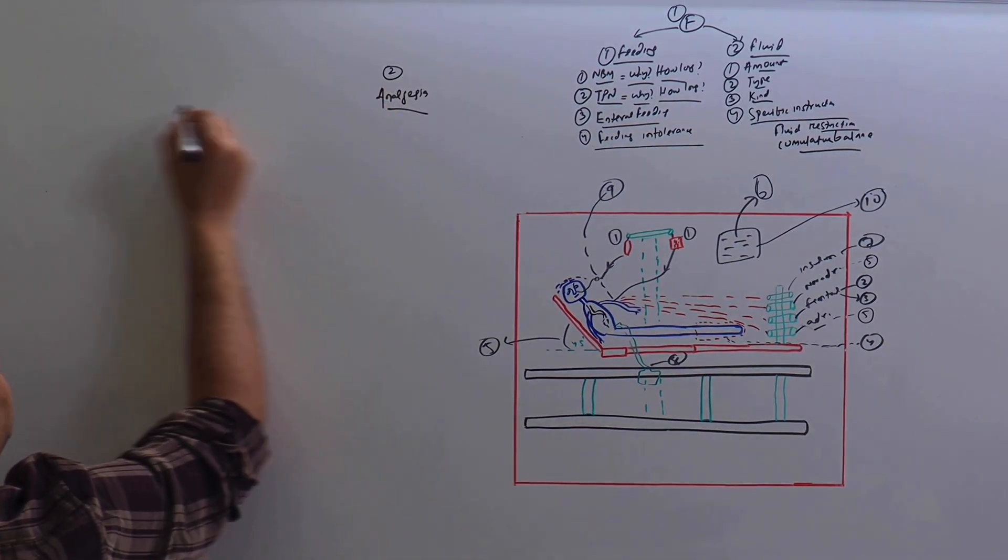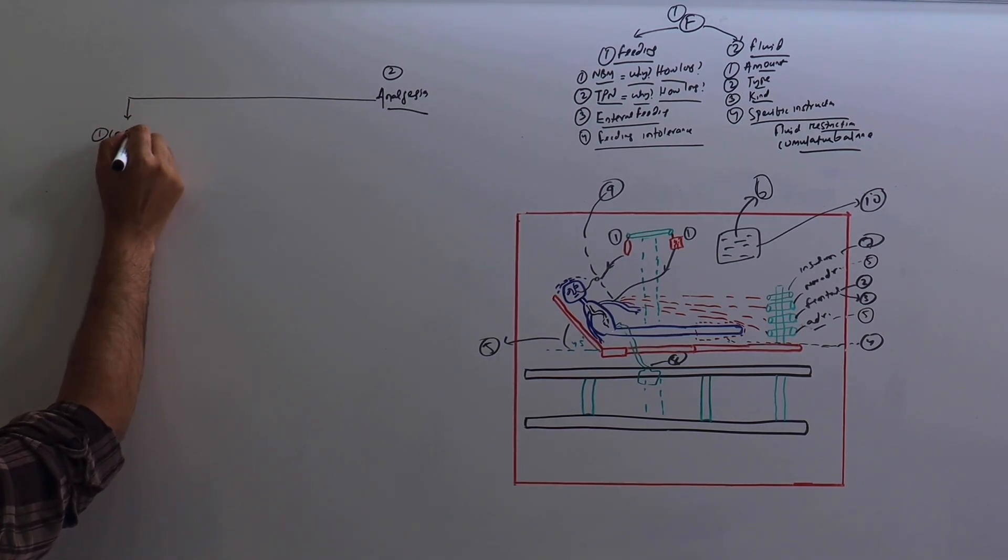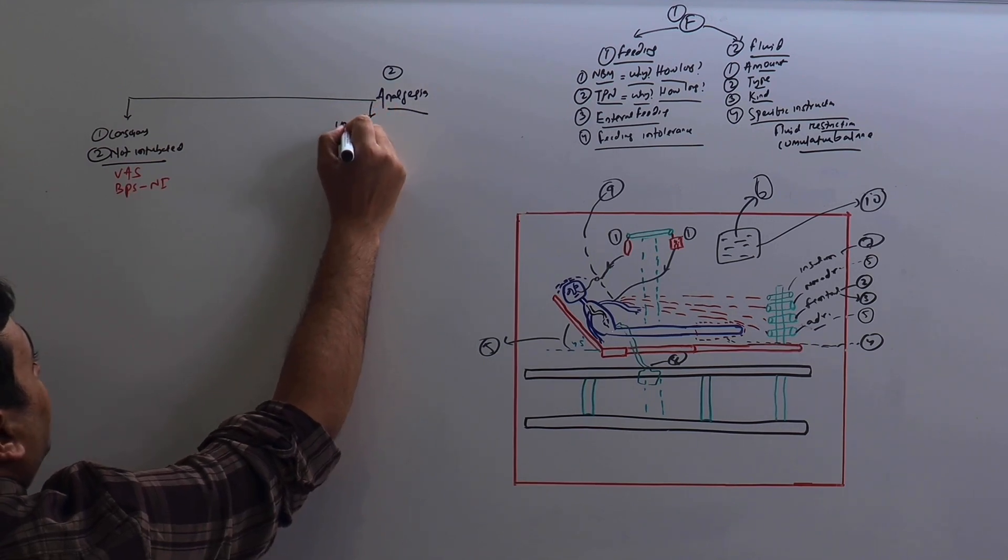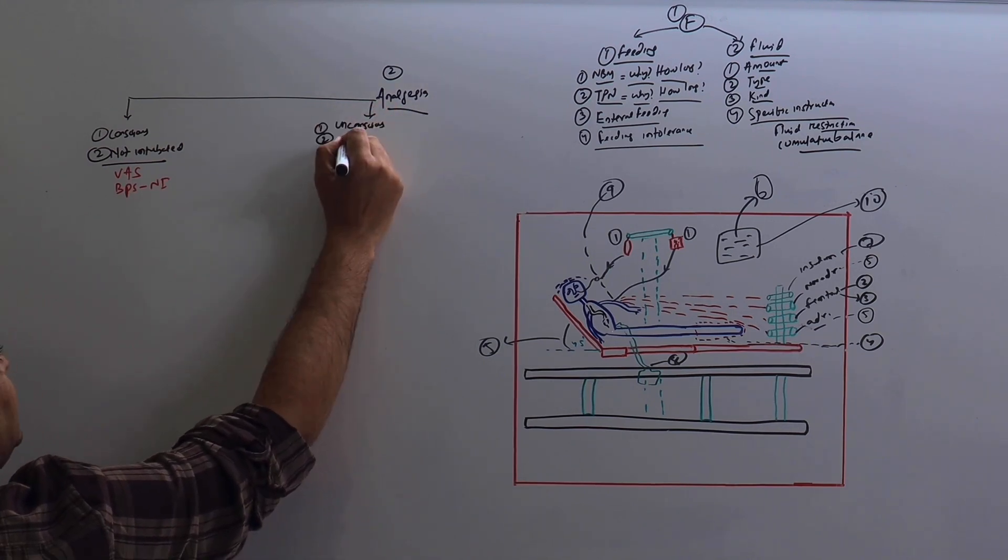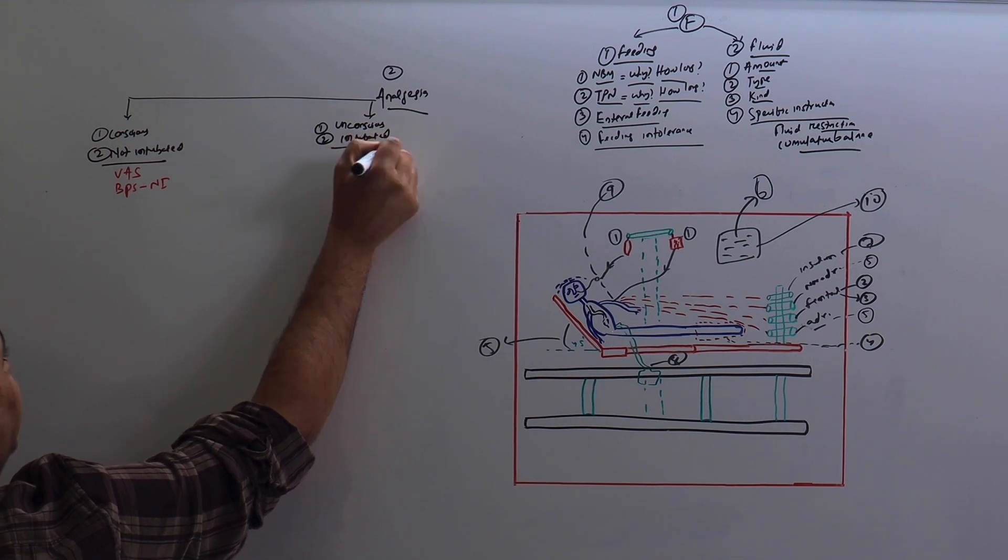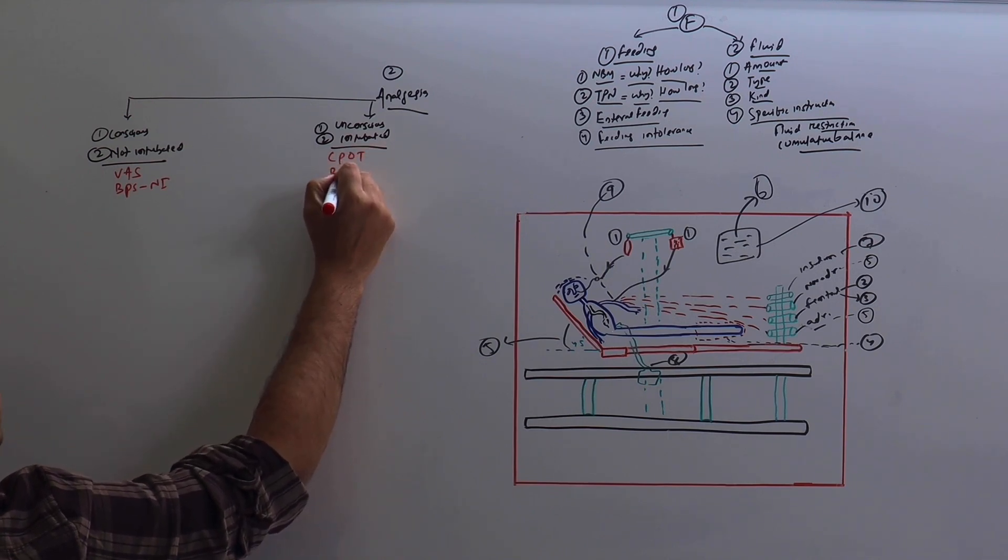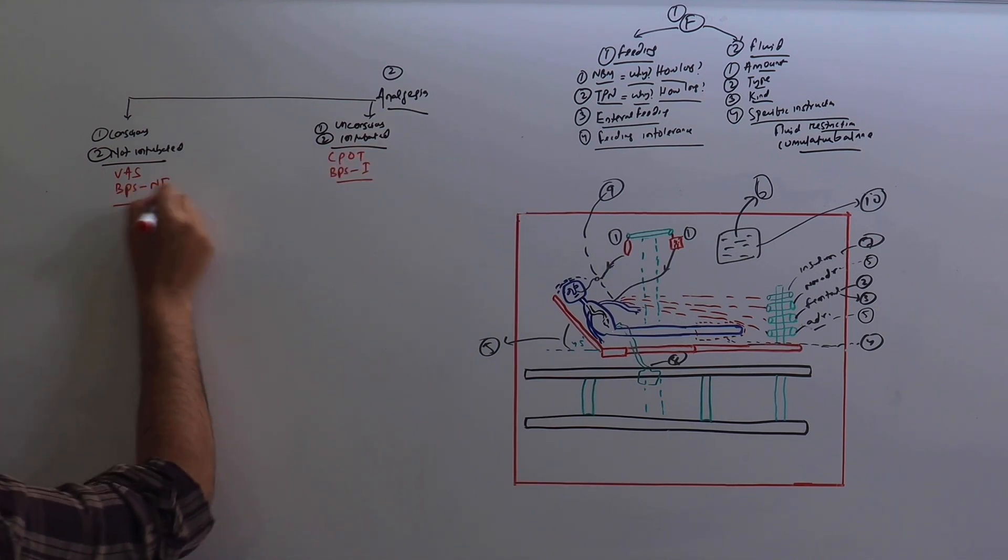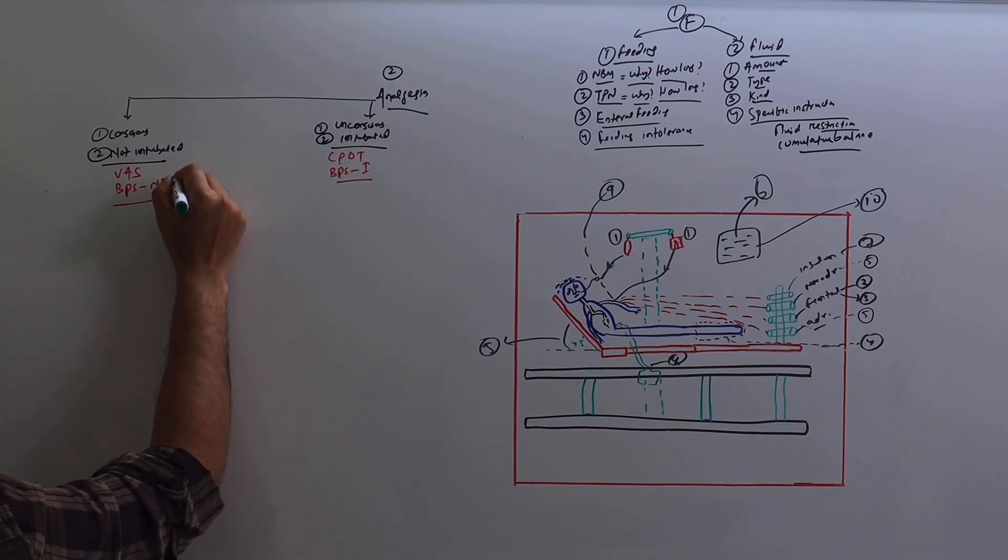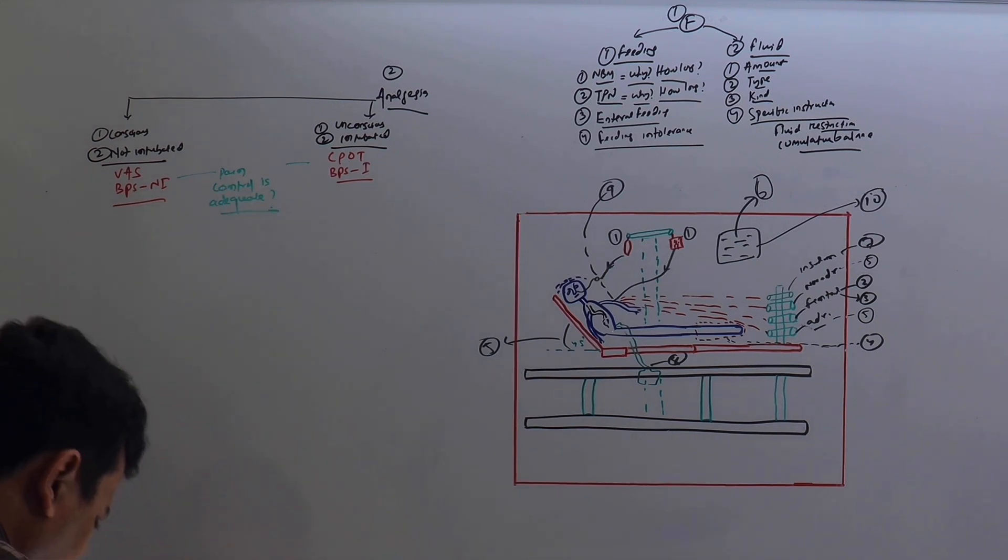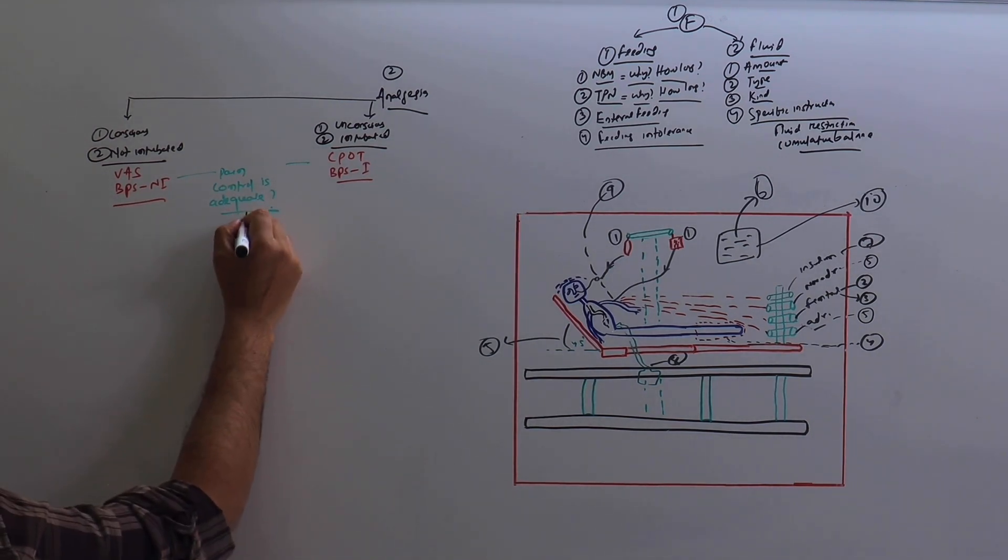Number two is analgesia. Here, two things. Number one is patient is conscious, is not intubated. Here we need to use visual analog scale or behavioral pain scale not intubated. Another will be unconscious or sedated patients and intubated patients. Here we use the scale CPOT—critical care pain observation tool—or behavior pain scale intubated. But from both of these, we have to find out only one question: whether my pain control is adequate or not.